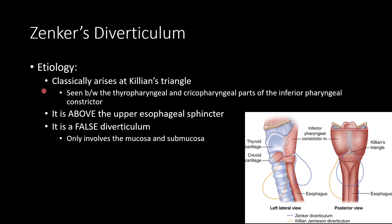So, Zenker's Diverticulum — classically, the etiology — you're going to see this arise at Killian's Triangle, which is one of the weakest points of the esophagus. This is where the inferior pharyngeal constrictor muscles are, and on this graph you can see there's an exposed area of the esophagus. It's going to be the thyropharyngeal and cricopharyngeal parts of the inferior pharyngeal constrictor that make up Killian's Triangle. The blue dotted line on the graph shows where this Zenker's Diverticulum would pouch out to, drooping over the middle portions of the esophagus.